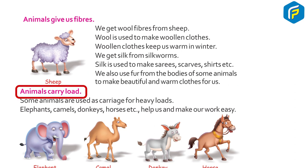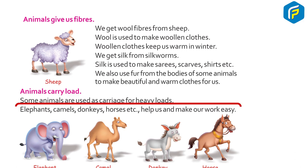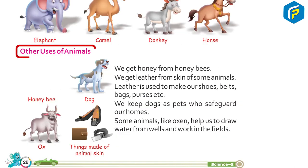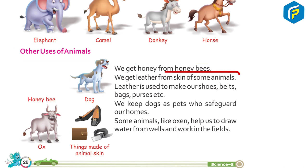Some animals are used as carriage for heavy loads. Elephants, camels, donkeys, and horses help us and make our work easy. For other uses: we get honey from honeybees, and we get leather from the skin of some animals. Leather is used to make shoes, belts, bags, purses, etc.